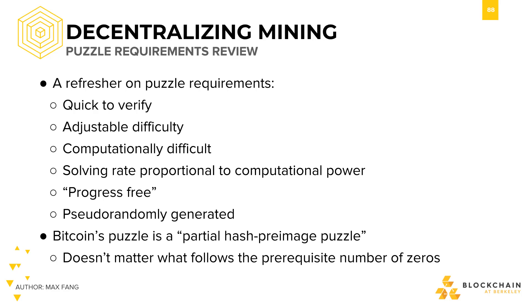The puzzle that we're dealing with in Bitcoin is described as a partial hash preimage puzzle. You don't have to find the exact preimage of the hash, as long as you have the prerequisite number of leading zeros.